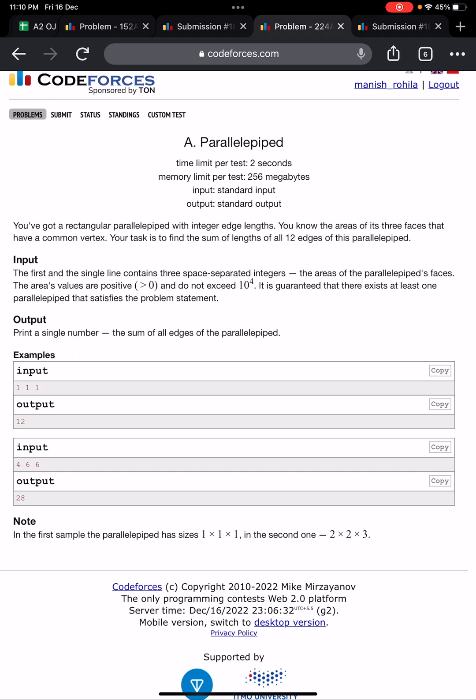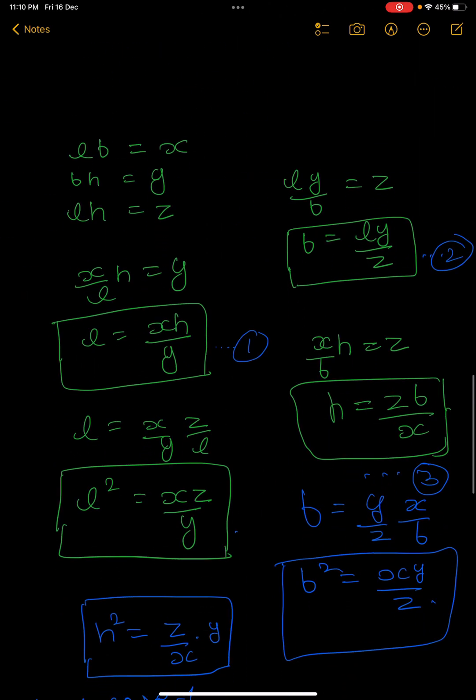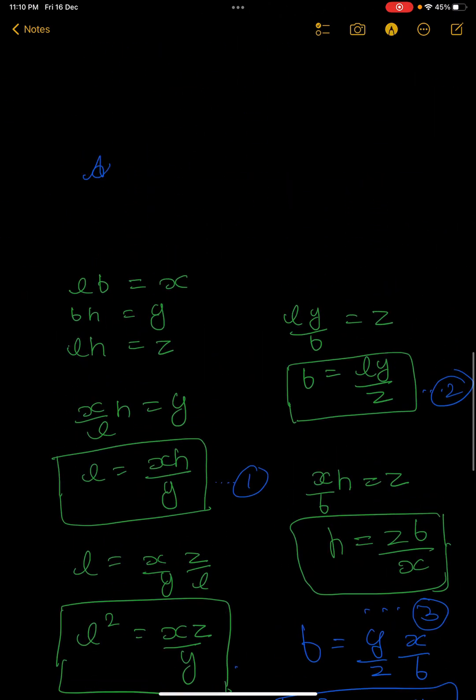You have to find the sum of lengths of all 12 edges. Let's discuss how we can solve this. Simply, the area of one face is equal to length times breadth, or breadth times height, or length times height. These are the three faces in the rectangular parallelepiped.